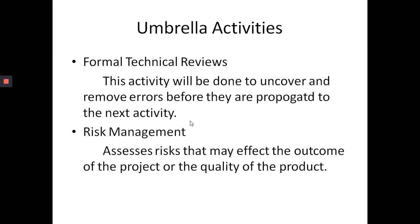The third umbrella activity is formal technical reviews. This activity is done to uncover and remove errors before they are propagated to the next activity. If the software engineer develops the project without checking errors in the first module, those errors will affect all subsequent modules. To avoid that, formal technical reviews are conducted where software engineers, managers, and customers review weekly activities, identify errors, rectify them, and only then move to the next activity.